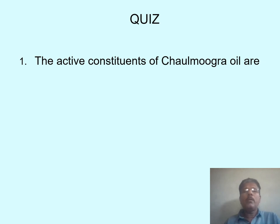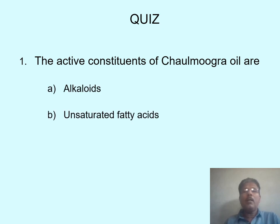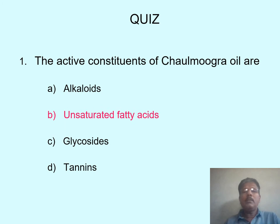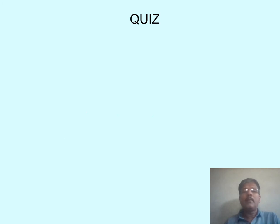Under this topic, the quiz questions are: The first question — the active constituents of Chaulmoogra oil are: alkaloid, unsaturated fatty acid, glycoside, or tannins. Your answer is unsaturated fatty acids.